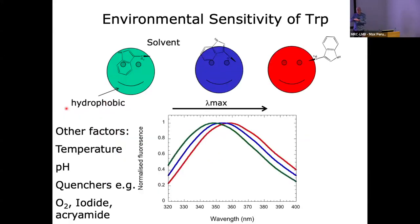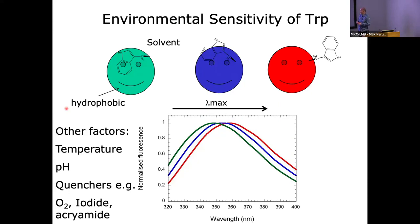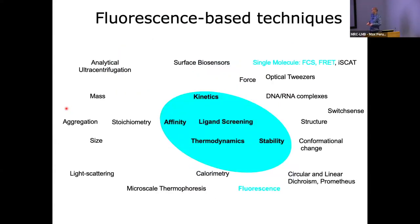Fluorescence is very sensitive to the environment. If you imagine you had a fluorescence group in a very hydrophobic environment, say in the centre of the protein, and then you start to unfold it so it gets exposed to the solvent, then what you see is a change in the maximum emission wavelength - it red-shifts. Other factors that fluorescence can be affected by are temperature and pH. There used to be a lot of work done on fluorescence quenching with oxygen, iodine and acrylamide, but we're just going to focus on other techniques today.